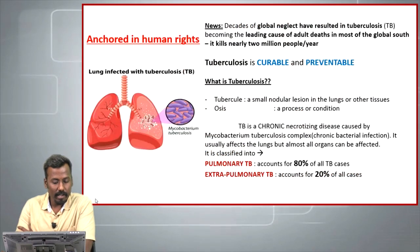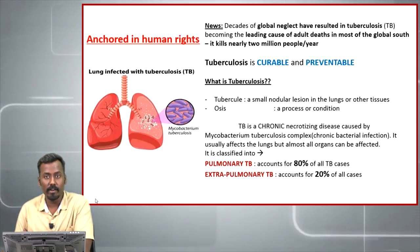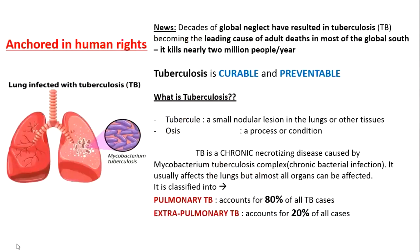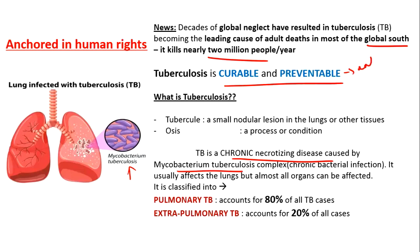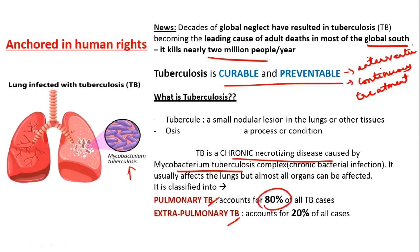The next article is about the violation of human rights while undertaking TB treatment. TB is one of the most deadly diseases in the world, killing more than 2 million people per year in the global south. Tuberculosis is caused by Mycobacterium tuberculosis — it is a chronic, necrotizing disease that is curable and preventable but needs timely intervention and continued treatment. There are two types: pulmonary TB, accounting for 80% of all TB cases, and extra-pulmonary TB, accounting for 20%.